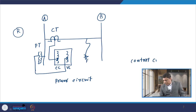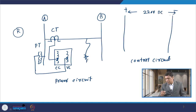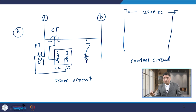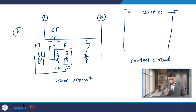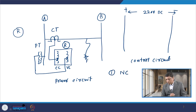The other circuit the relay has is the control circuit. In the control circuit, all the contacts of the relay are connected. The control circuit requires 220 volt DC supply — sometimes 110 volt DC supply — and nowadays you can also give AC supply. If the relay is connected in the power circuit, it has certain contacts. Basically there are two types of contacts: one is known as normally closed contact and the other is known as normally open contact.